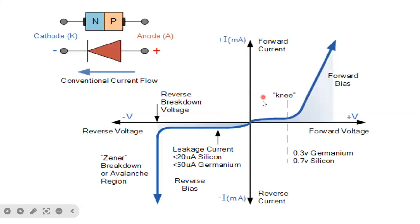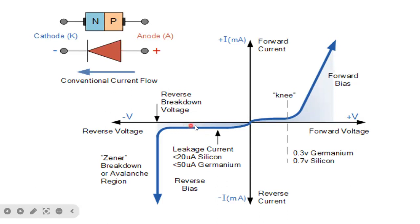Forward current — when the diode is turned on, the current flowing through the diode increases. That current is called forward current, because of majority carriers. During reverse biased condition, because of minority carriers, there is leakage current. During reverse biased condition, only a very small amount of current flows through the diode. During forward biased condition, the current increases very rapidly.